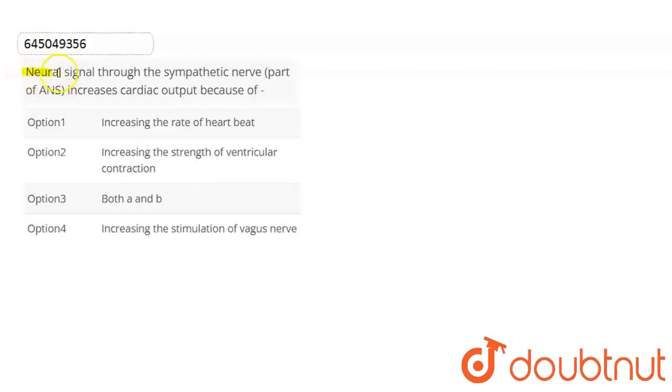Yes, friends. In this question, we're asked: neural signals through the sympathetic nerve, part of the autonomic nervous system, increases cardiac output because of what?